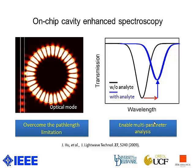Another benefit of on-chip cavity-enhanced spectroscopy is that the resonance peak of the transmission of the cavity not only gives you the information of the optical absorption, but also gives you the refractive index information, which enables this technique for multi-parameter analysis of chemicals.